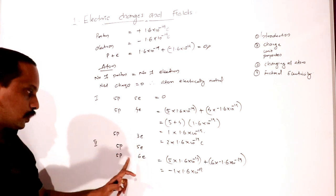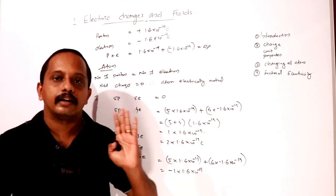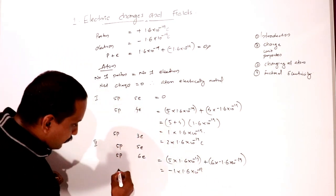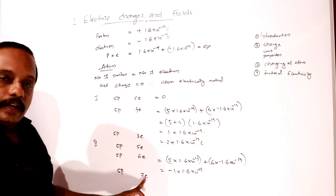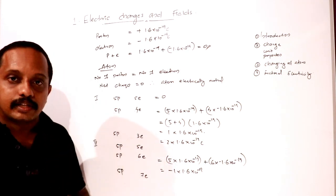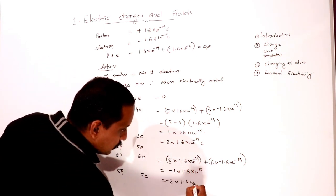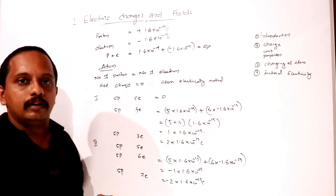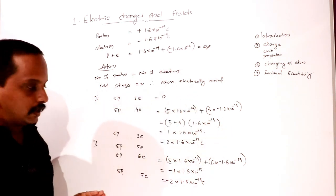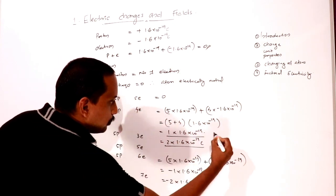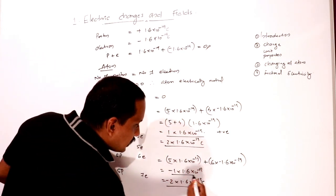If 5 protons and 6 electrons are present, the atom has one extra electron: charge = −1 × 1.6 × 10⁻¹⁹ C. Losing an electron makes the atom positive; gaining an electron makes the atom negative.